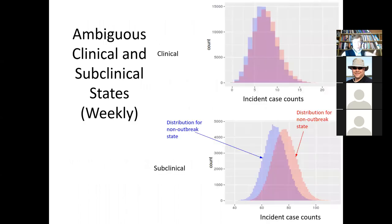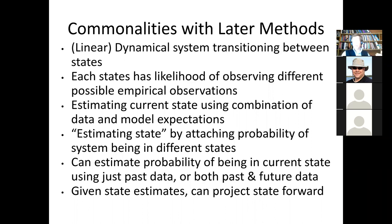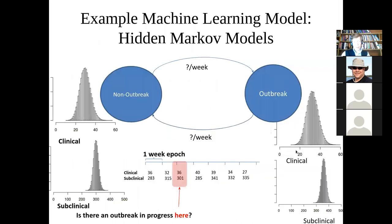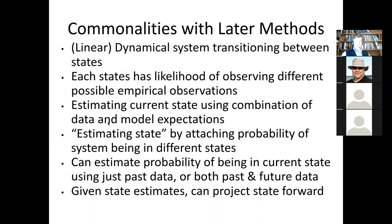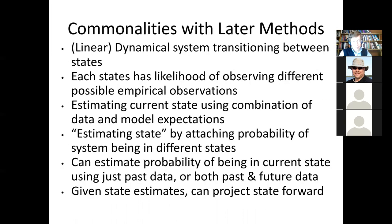We have a dynamical system transitioning between states. Each state has a likelihood of observing certain empirical observations — in an outbreak state you're more likely to observe high case counts than in a non-outbreak state. The current state is what we want to estimate based on observations, but since they're very ambiguous, we also want to take into account what state it was last time, because that may clue us in a lot to what it is now.